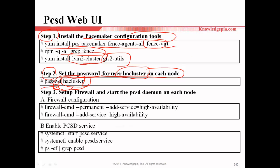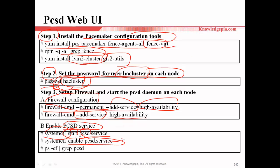Step three: set up firewall and start the PCSD daemon on each cluster node. For the firewall, I already explained the firewall configuration in the previous chapter, so it's the same. Use firewall-cmd --permanent --add-service high-availability. Also need to add this service to the firewall. And then enable the PCSD service using: systemctl start pcsd.service, and also enable pcsd so that when Linux starts, this service will also start. Then check the process using this command.